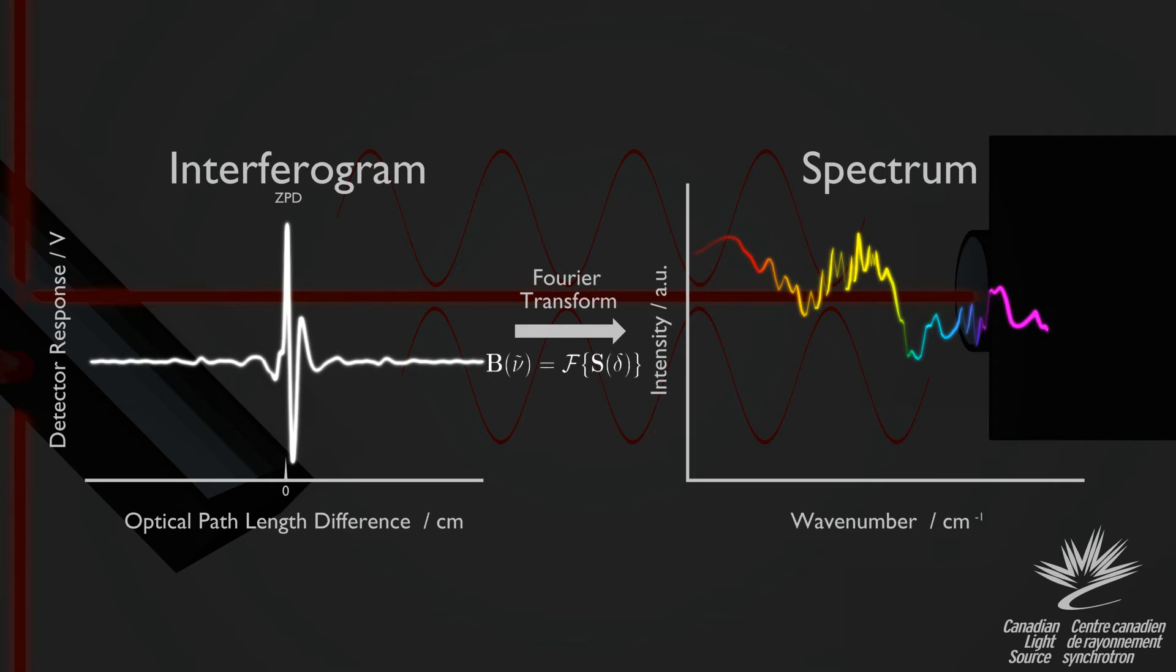The essence of Fourier transform infrared spectroscopy is that we can find the relative intensities of each wavelength by taking the Fourier transform of this whole interferogram.